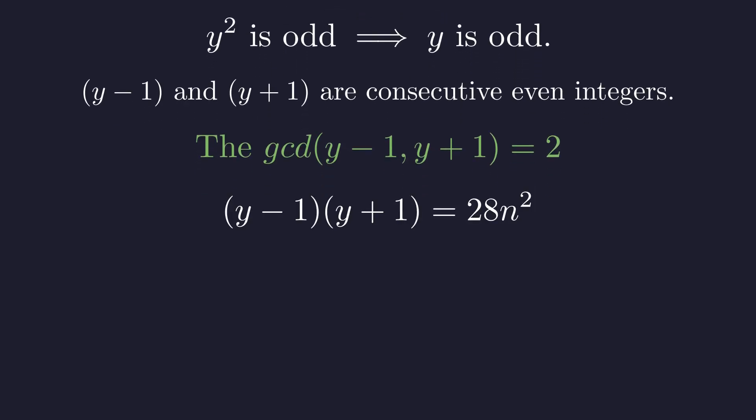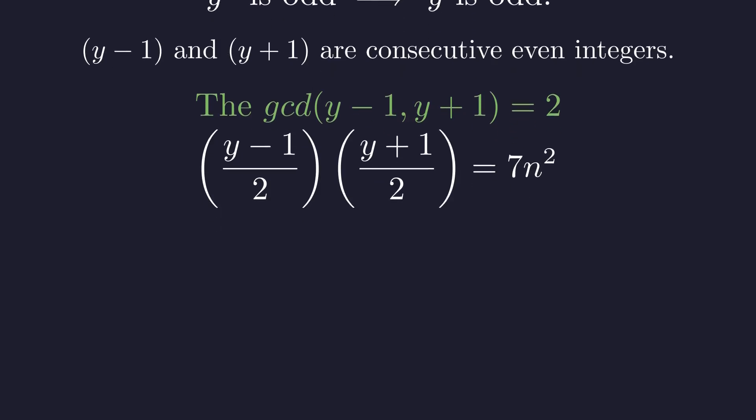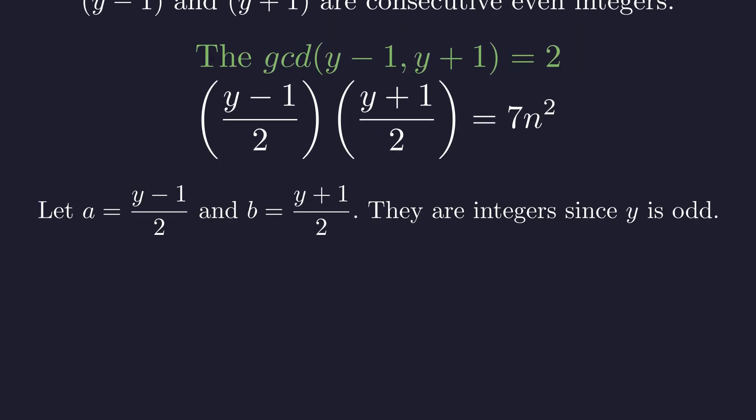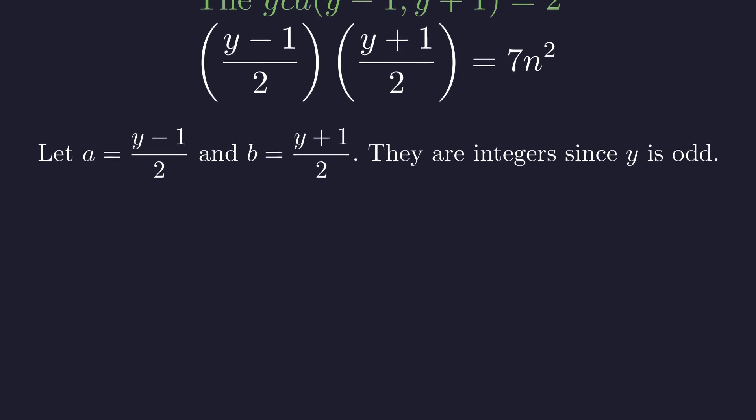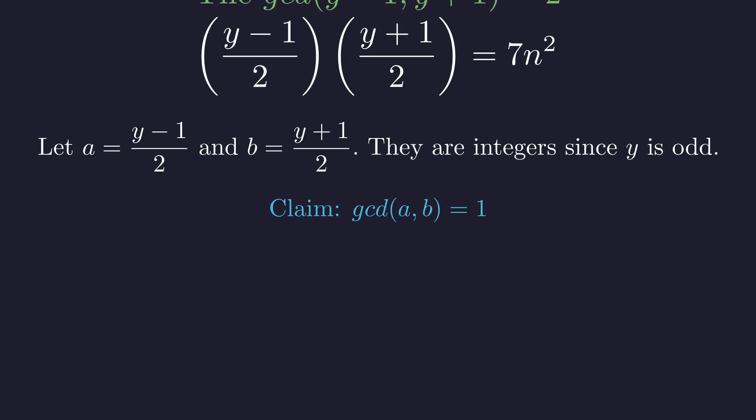Let's return to our factored equation. Since y minus 1 and y plus 1 are both even, we can divide the entire equation by 4. This yields the product of the quantity y minus 1 over 2 and the quantity y plus 1 over 2 equals 7 times n². Let's call these factors a and b. They are integers because y is odd.